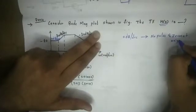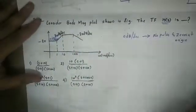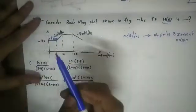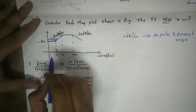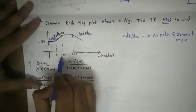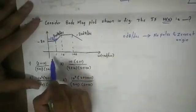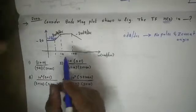So there are no poles and zeros at the origin — only finite poles and zeros. The corner frequencies are at 1, 10, and 100. These are the corner frequencies and we need to understand what the slope means at each.